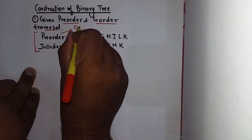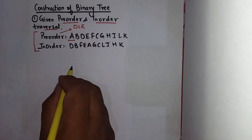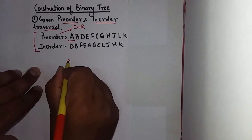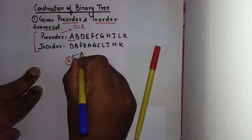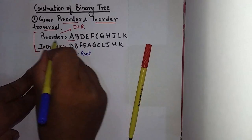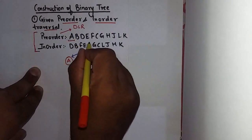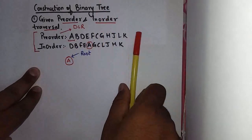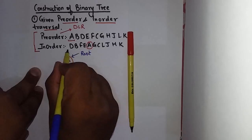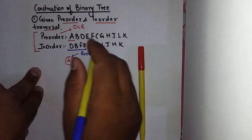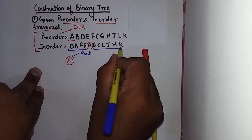First node is always the root node. In preorder we can see data, left, right. So when we draw a binary tree, A will be our root. Now check inorder. Inorder A is at this position. So the items left to the root node A are part of left subtree, and the items present at the right of the root node A are part of the right subtree.